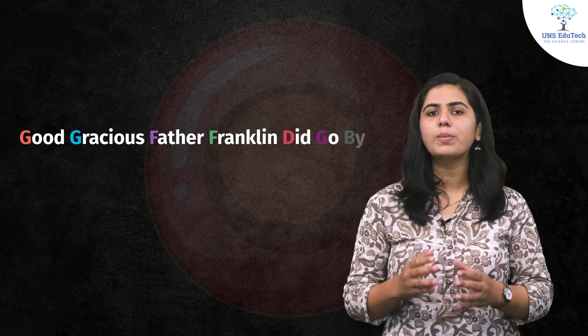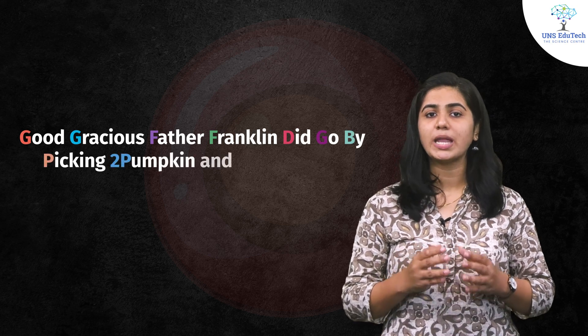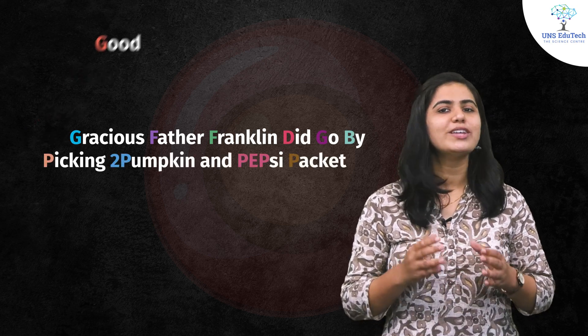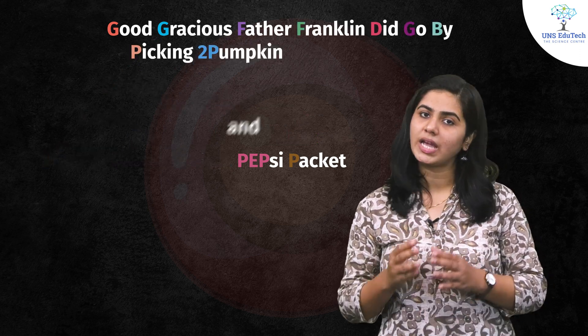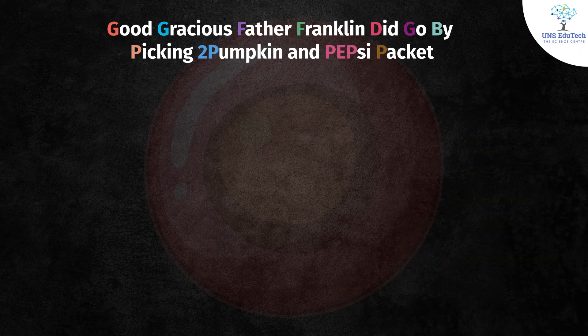Now let's see the mnemonic that will help us remember this chronological order of glycolysis. The mnemonic goes like this: "Good gracious father Franklin did go by picking 2 pumpkin and Pepsi packet." Here, the G from 'good' stands for glucose, and G from 'gracious' stands for glucose 6-phosphate.